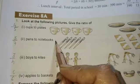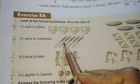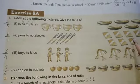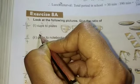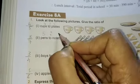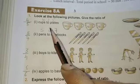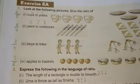Now pens to notebook, first you will count the pen one, two, three, four, five and this is notebook one, two, three, four, five, six, seven. So pens are fives and this is seven. So the ratio is five is to seven.